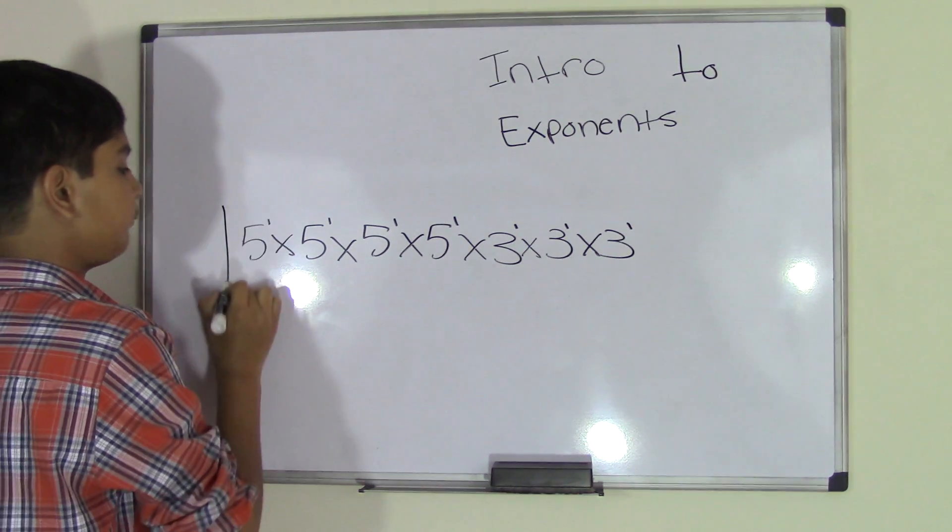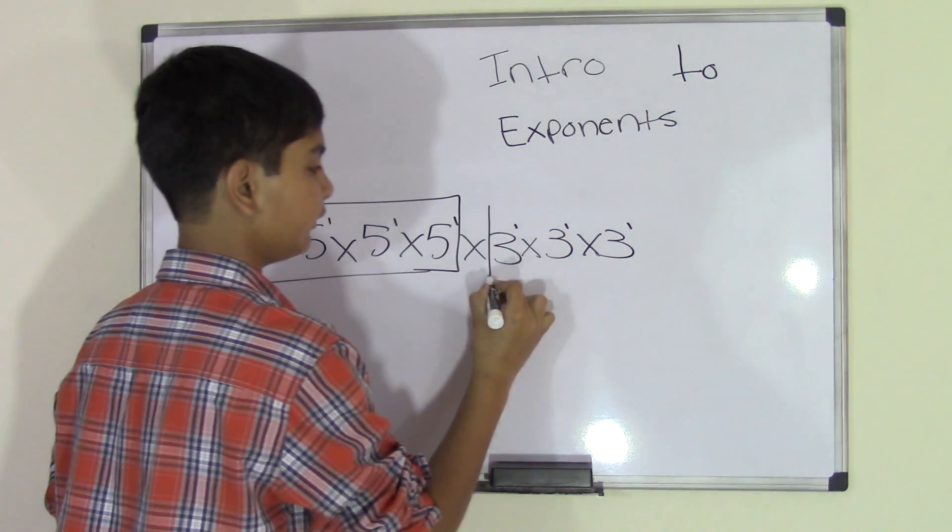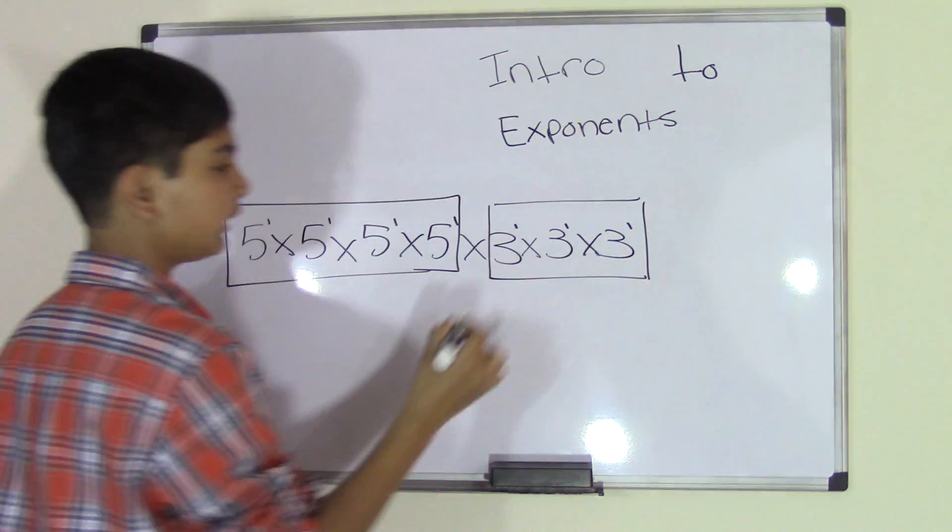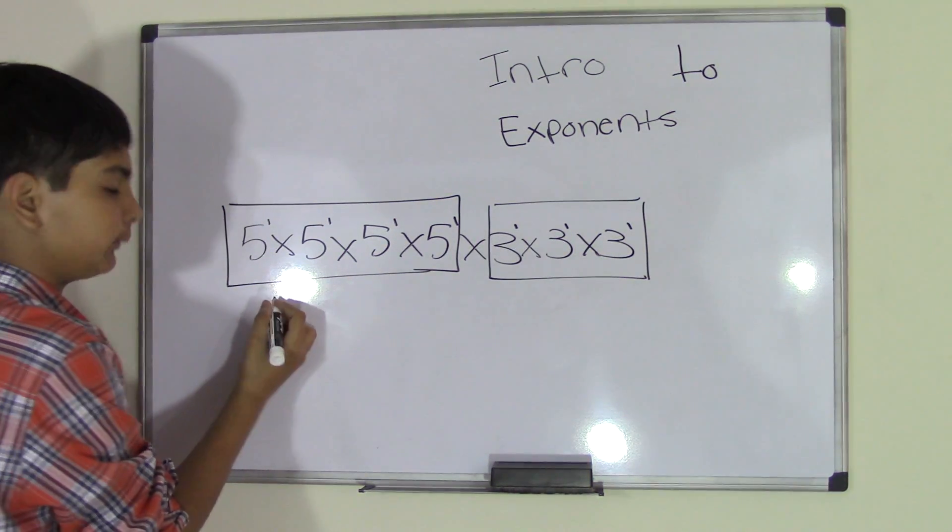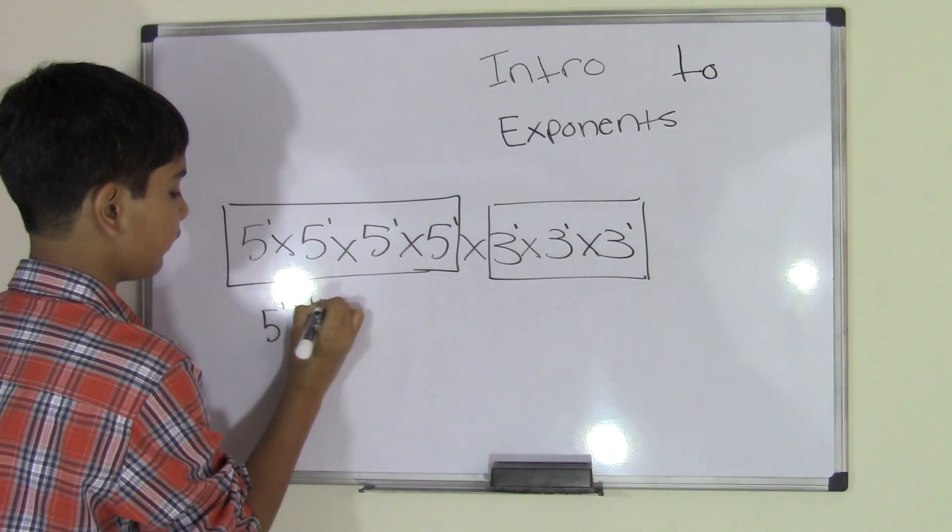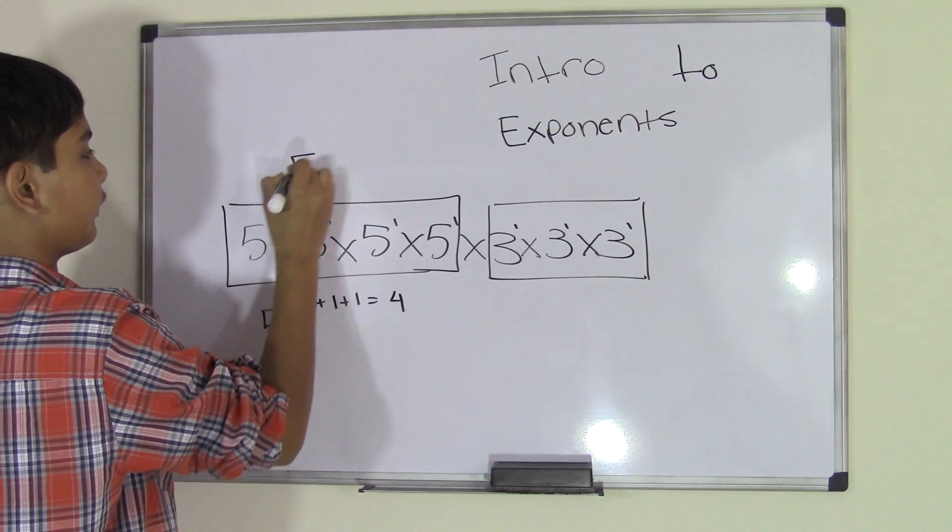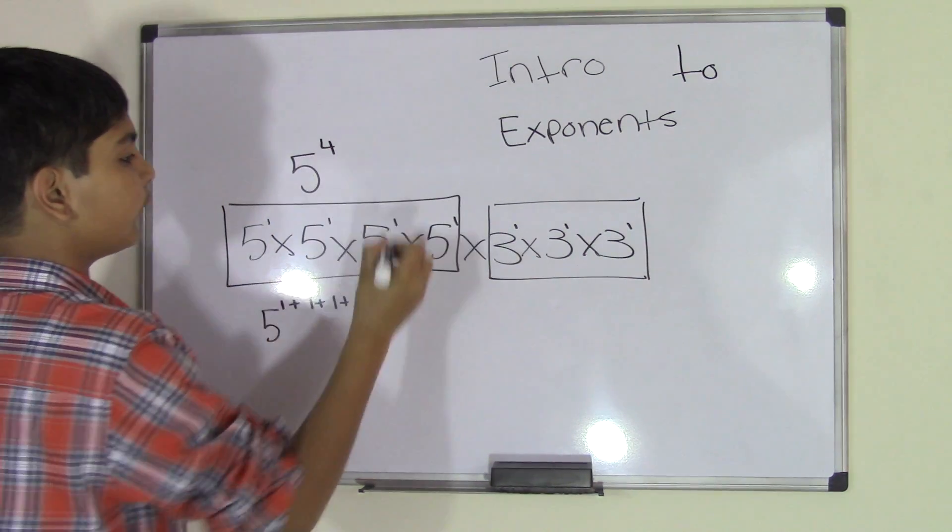Since we have the same numbers, for example, we have four 5s and we have three 3s, we can actually make this shorter. We can add their exponents. We can add 1 plus 1 plus 1 plus 1 and we get 4. So we can go ahead and write 5 to the power of 4 times.